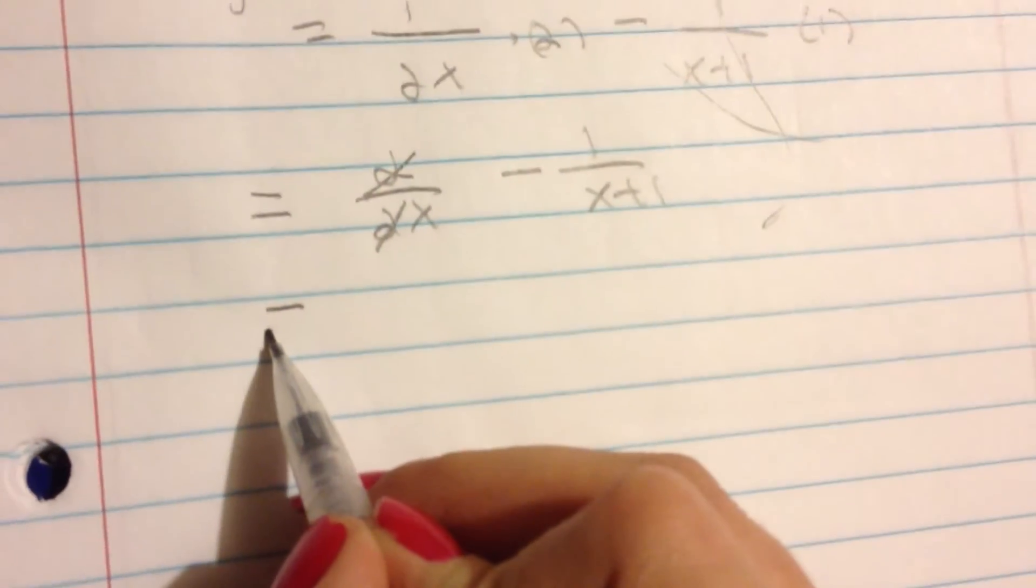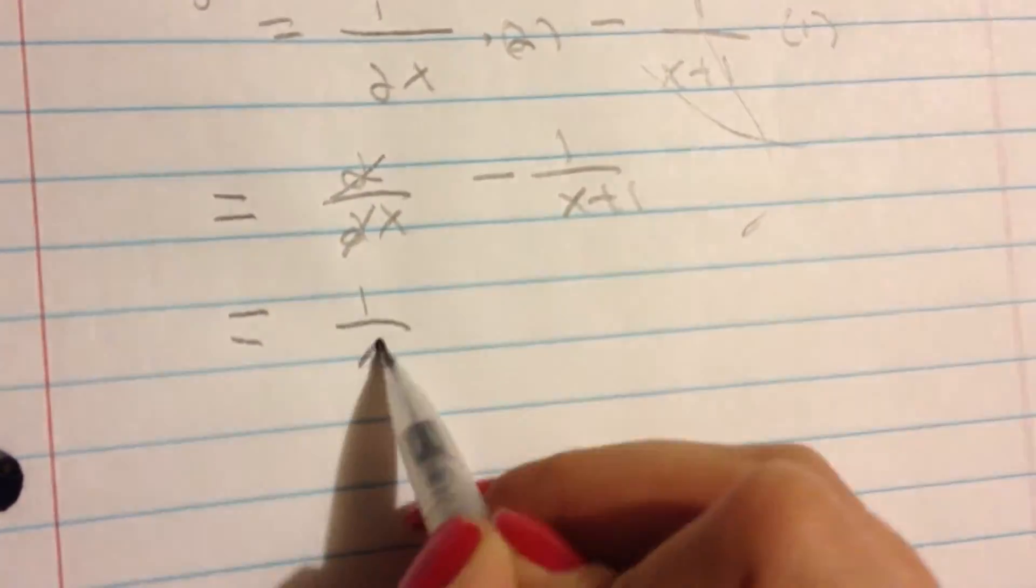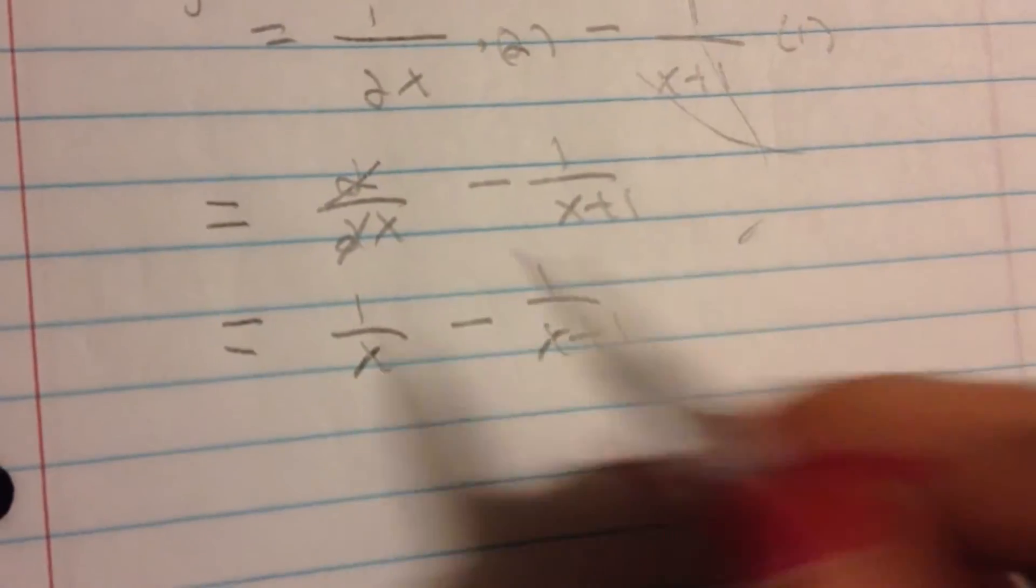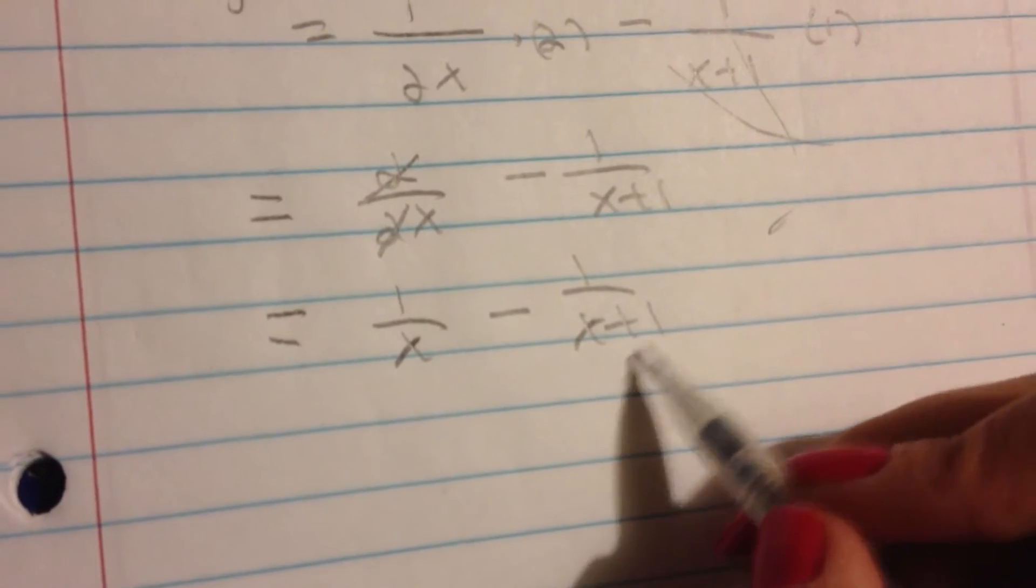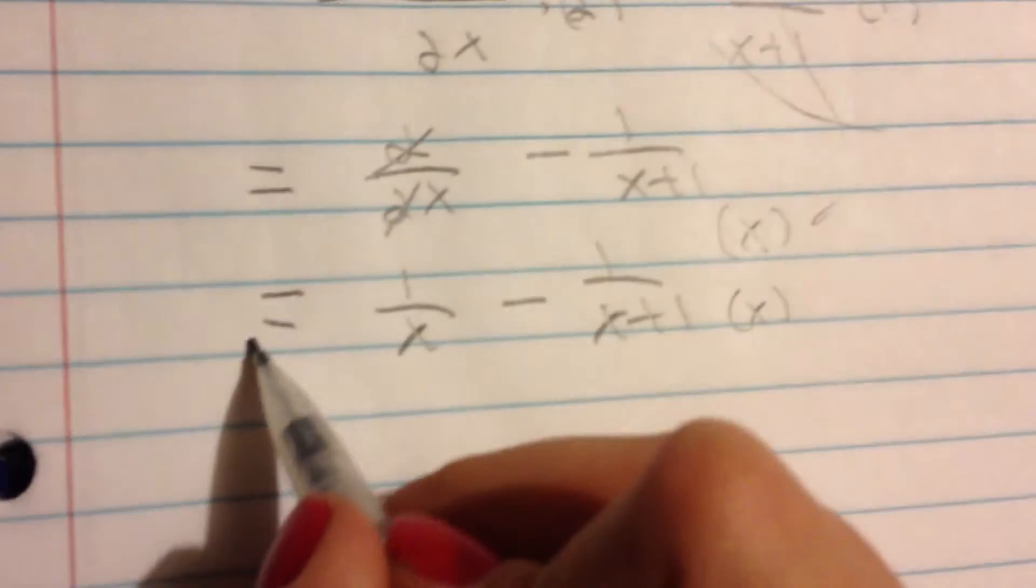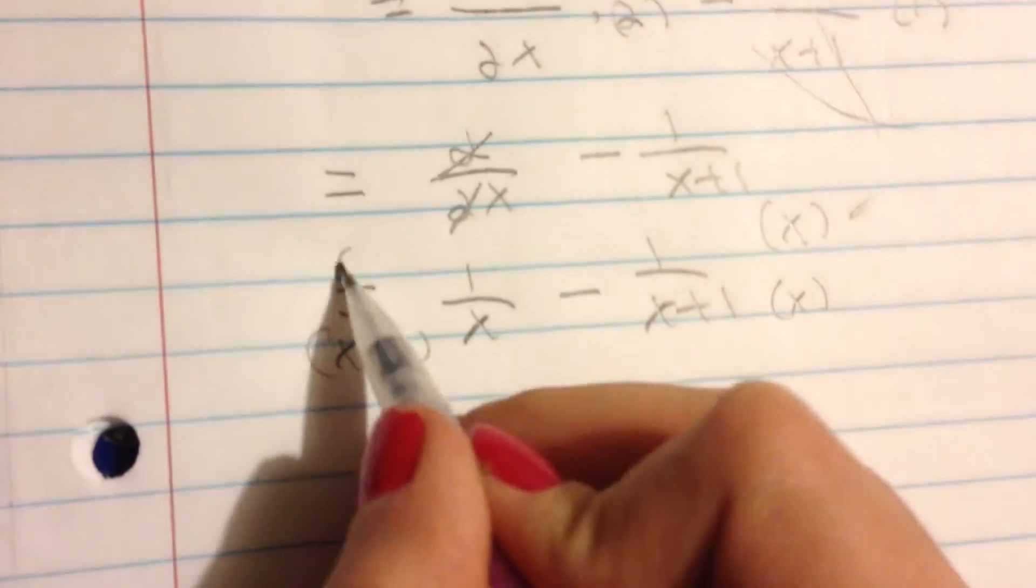So what we are going to end up with having is 1 over x minus 1 over x plus 1. We need to get a least common denominator. So we are going to multiply an x over here and over here, numerator and denominator, and an x plus 1 here and here.